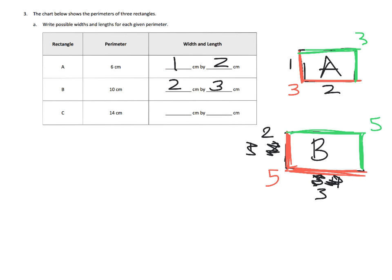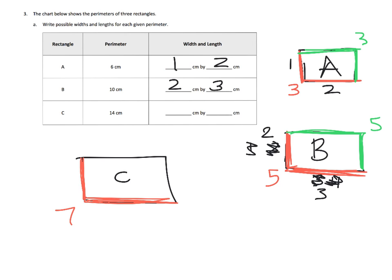Lastly, rectangle C is supposed to have a perimeter of 14. Well, 14 divided by 2 is 7. So the length and width has to equal 7, and the other length and width also has to equal 7, because that gives us our perimeter of 14. What combination gives us 7? We could do 2 and 5 — that gives us 7, so we could do a 2 by 5 rectangle. That's not the only possible answer; there are other combinations that equal 7. So parents and teachers, be aware — you're going to have to accept a variety of different correct answers.